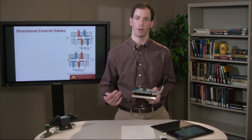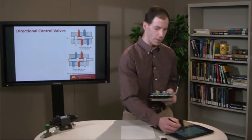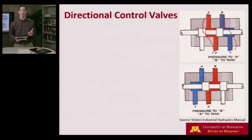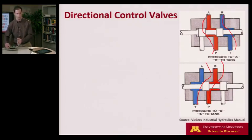In the top position I'm connecting my pressure to the A port and the tank to the B port, and that would cause the cylinder to move in one direction. As I shift the valve to another position, I connect the pressure to the B port and the tank to the A port. So just by moving the spool back and forth we can control the direction of the flow, hence a directional control valve.